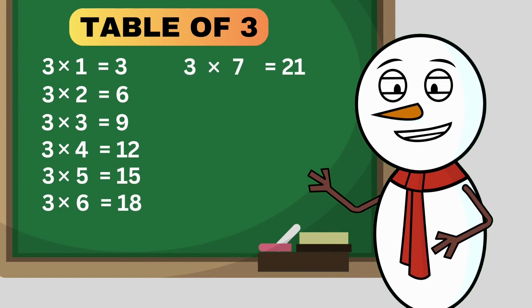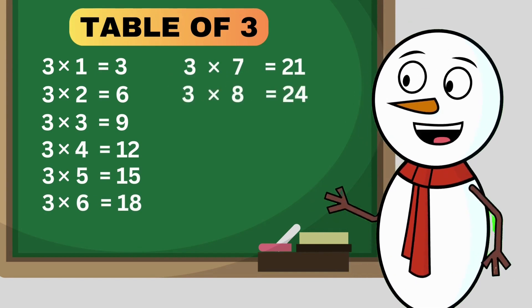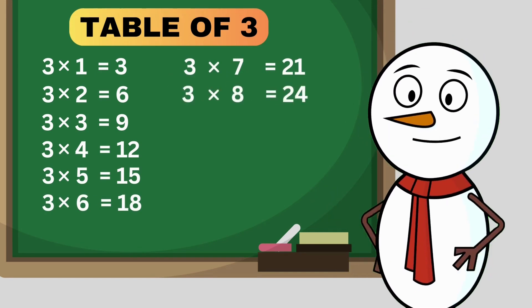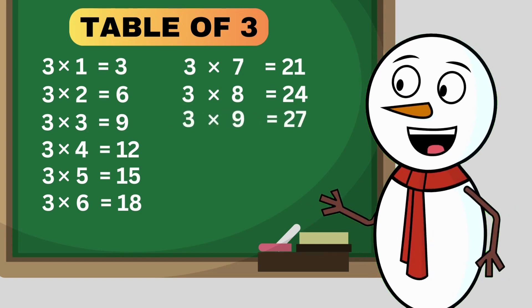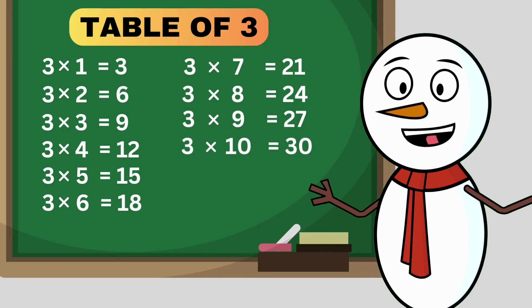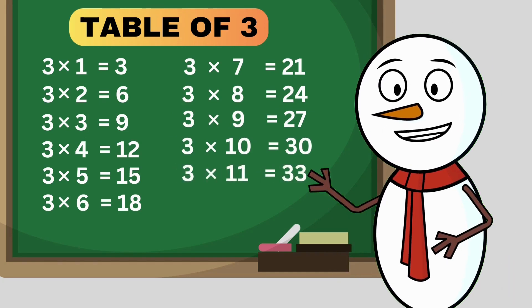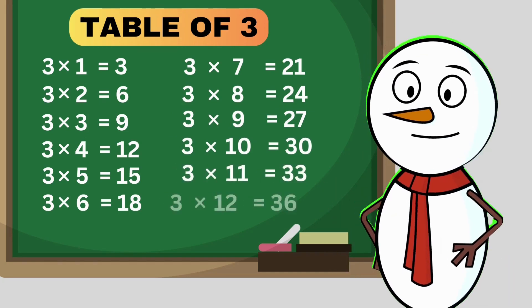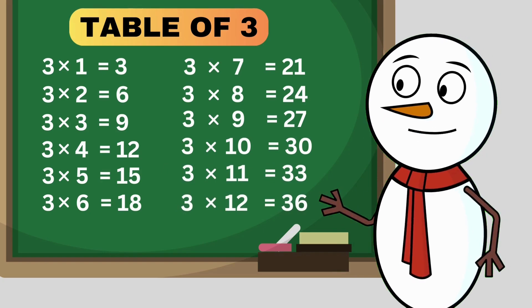3 times 7 is 21. 3 times 8 is 24. 3 times 9 is 27. 3 times 10 is 30. 3 times 11 is 33. 3 times 12 is 36.